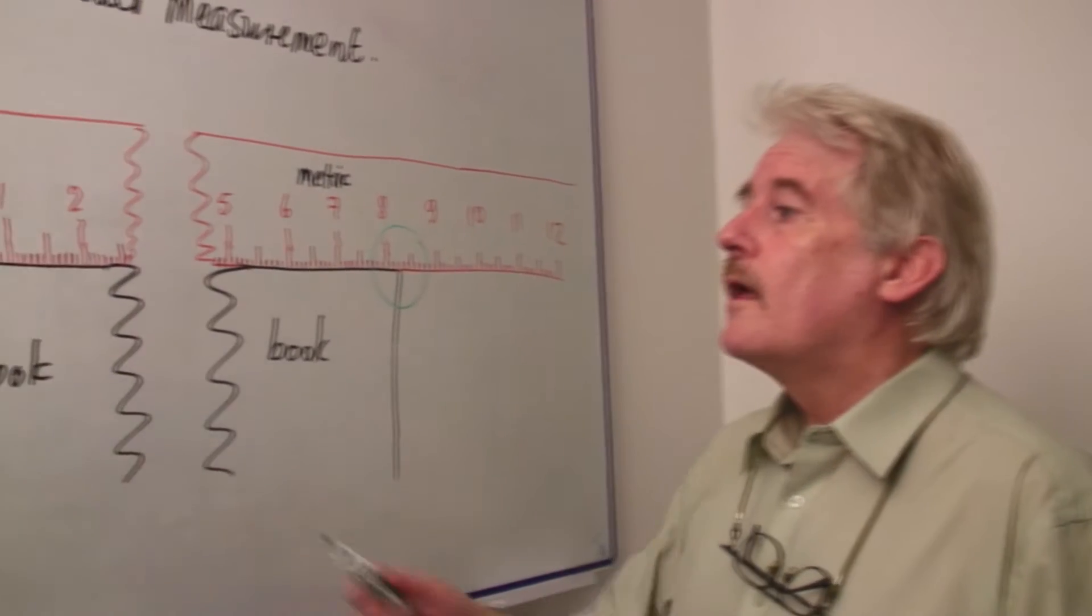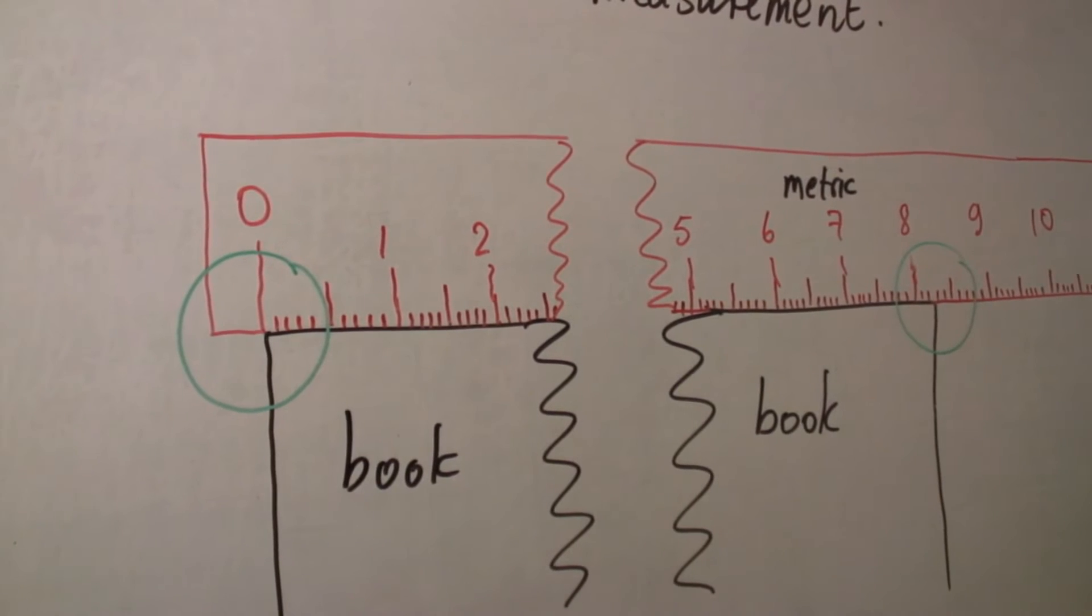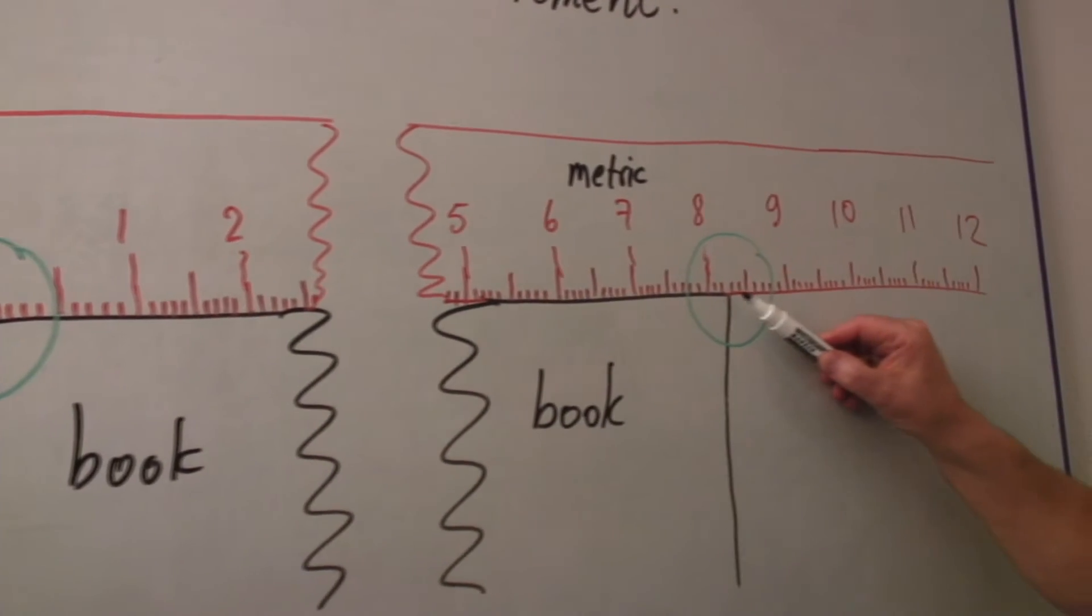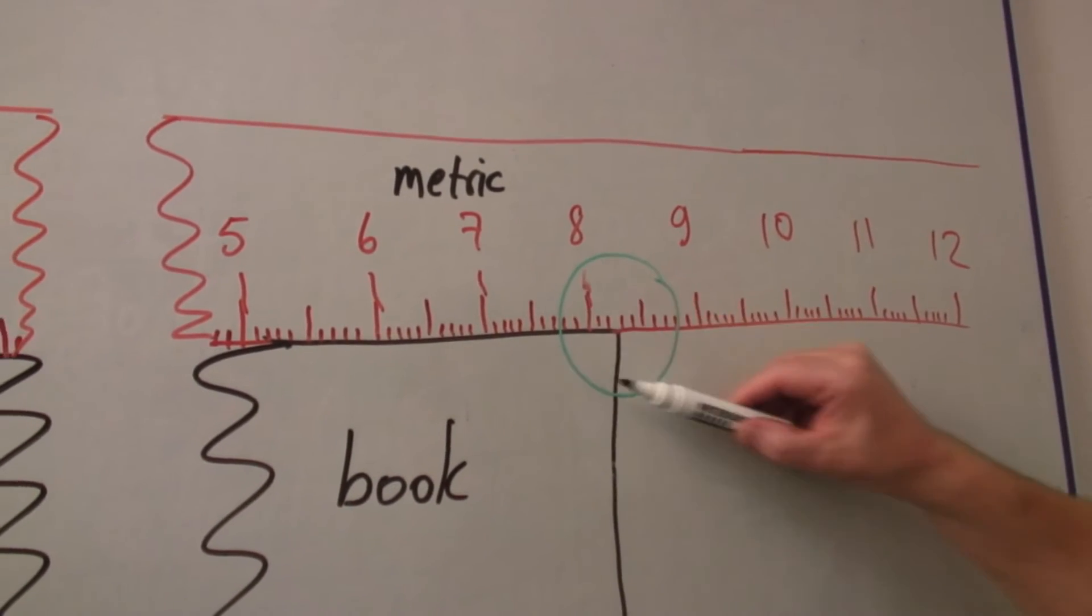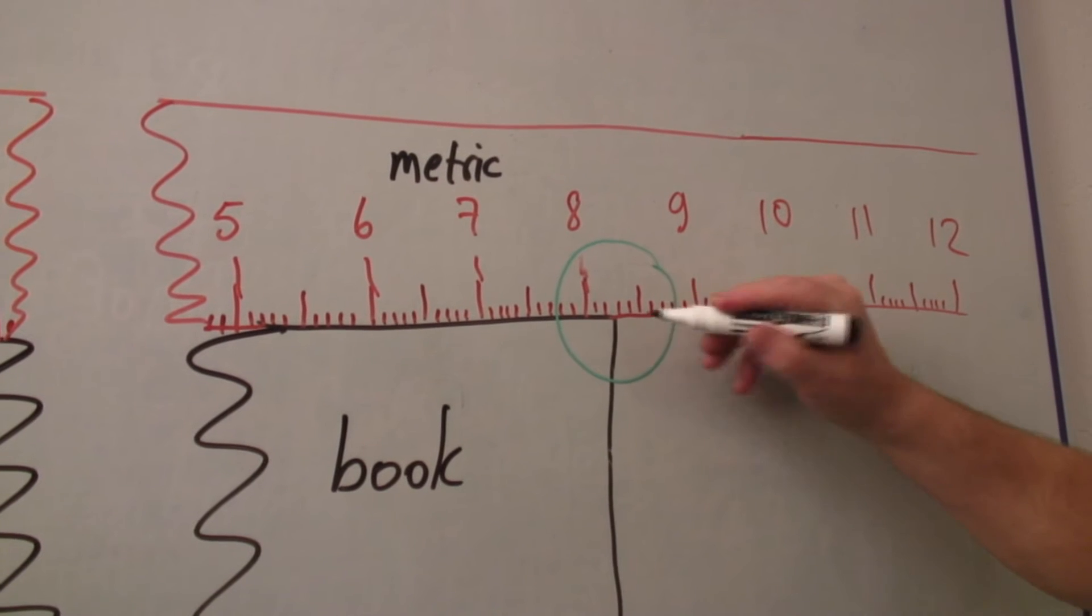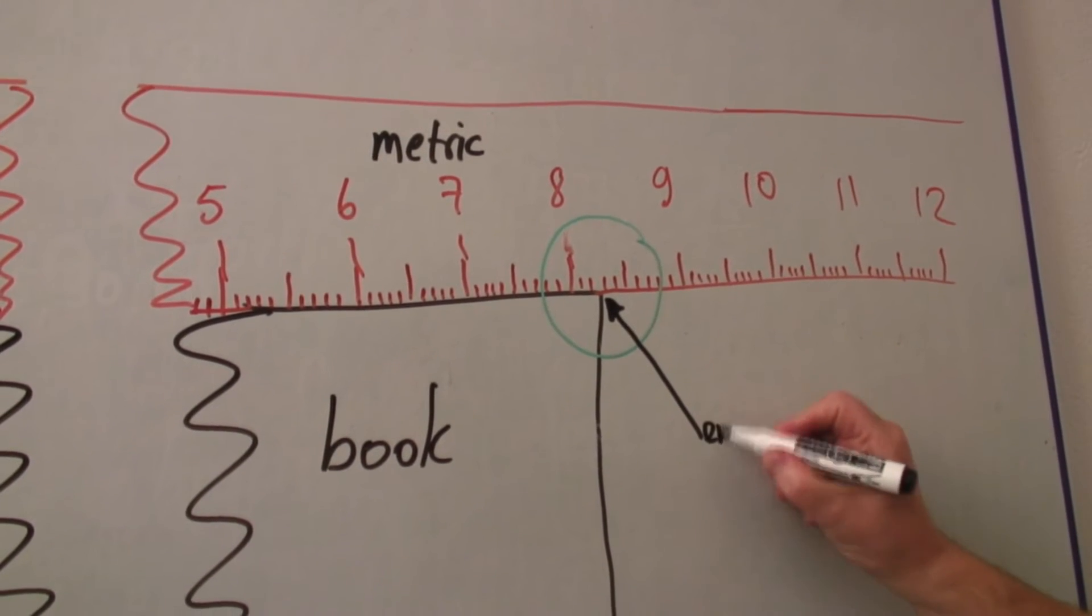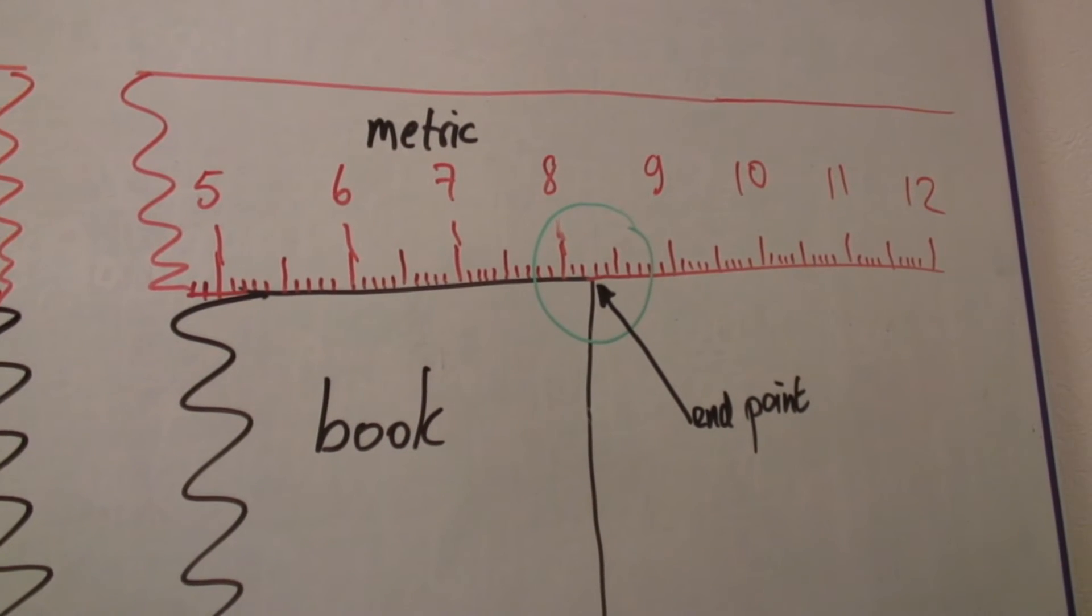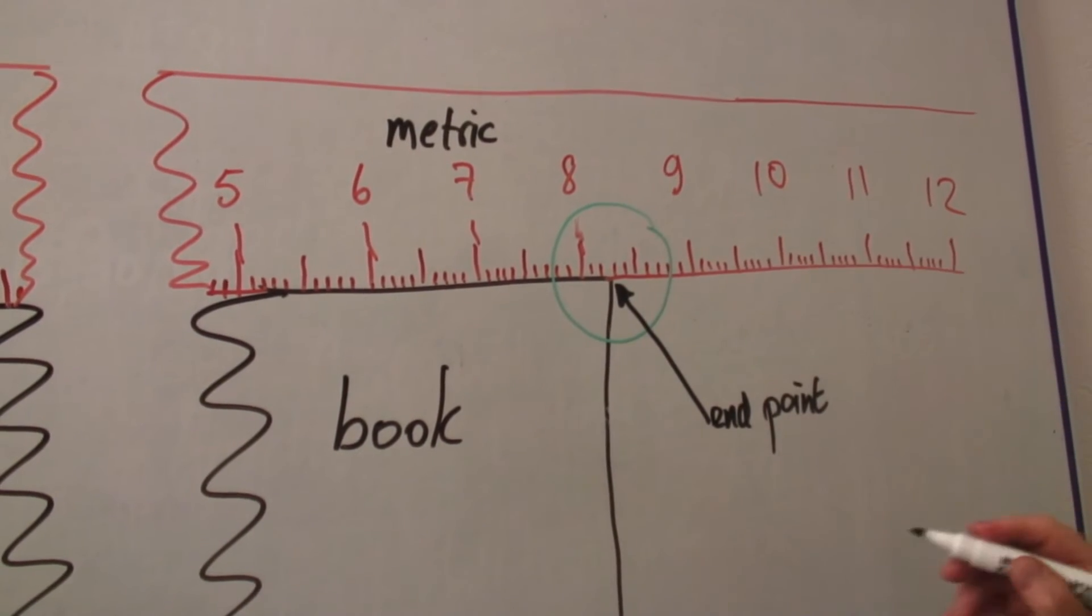So here we have to have it exactly on the zero. Well, as exact as you can be. The other end of the ruler then, we can see that on the scale, we have reached a point, and here is our endpoint. This is the important point, our endpoint. And that endpoint, if you can see, is between eight and nine.